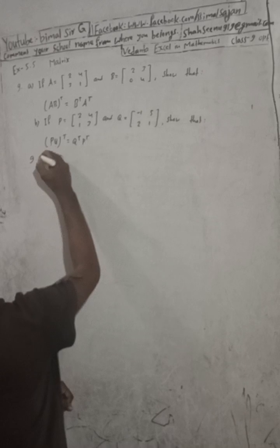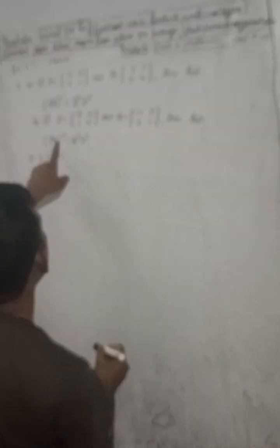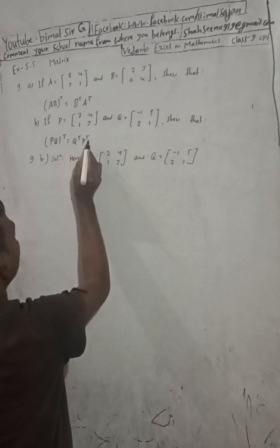Now question 9b: if P is equal to [2,4; 1,3] and Q is equal to [-1,5; 2,1], show that (PQ) whole transpose is equal to Q transpose into P transpose. This is the given part: P = [2,4; 1,3] and Q = [-1,5; 2,1]. We need to show this.